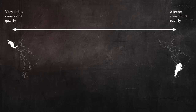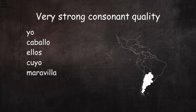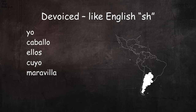On the other end of the spectrum are the Río Platense dialects, where the merged sound is pronounced with a very strong consonant quality. Listen to these examples: yo, caballo, ellos, cuyo, maravilla, ayer, cómo se llama. Some speakers of these dialects have even gone so far as to de-voice the sound, pronouncing it like English SH. Here's how they would pronounce those words: yo, caballo, ellos, cuyo, maravilla, ayer, cómo se llama.